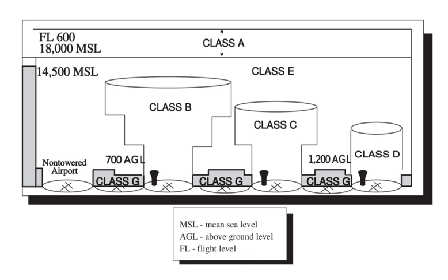Class E airspace is controlled airspace which is neither Class A, B, C, nor D. In most areas of the United States, Class E airspace extends from 1,200 feet AGL up to but not including 18,000 feet MSL, the lower limit of Class A airspace. There are areas where Class E airspace begins at either the surface or 700 feet AGL, used to transition between terminal and en-route environments around non-towered airports. These areas are designated on sectional charts. Most airspace in the United States is Class E, and the airspace above FL600 is also Class E.